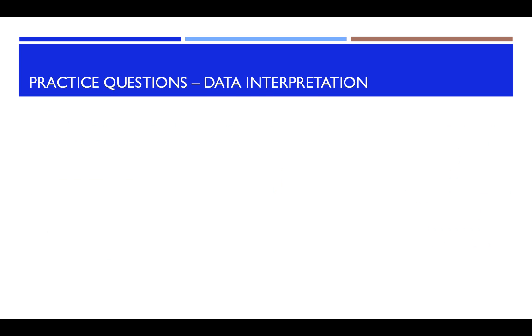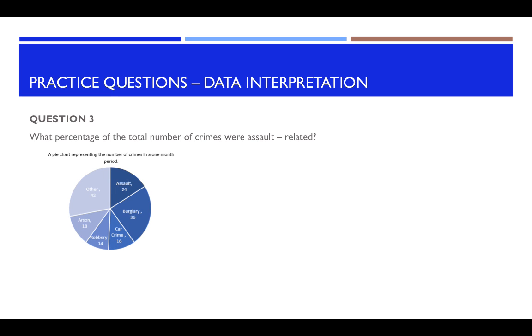Some practice questions for data interpretation. What percentage of the total number of crimes were assault related? So there is your diagram and the assault related would be this one here which is 24.